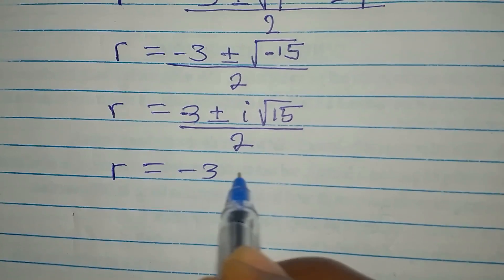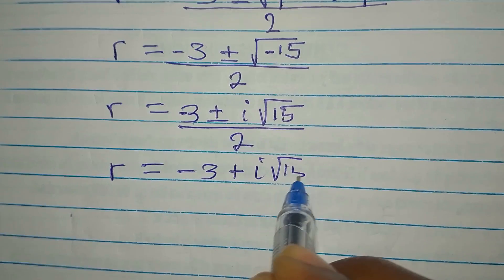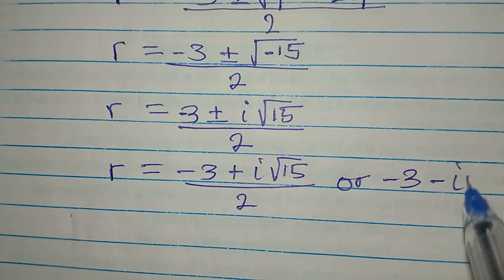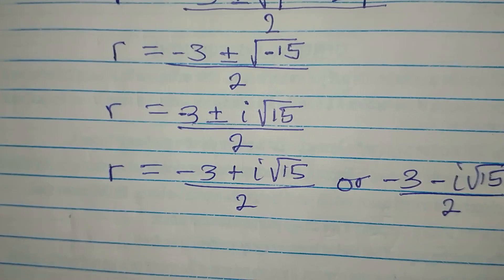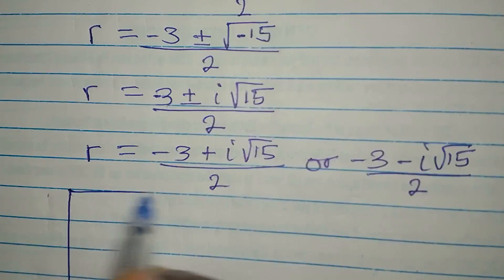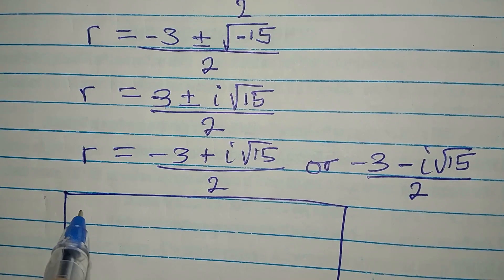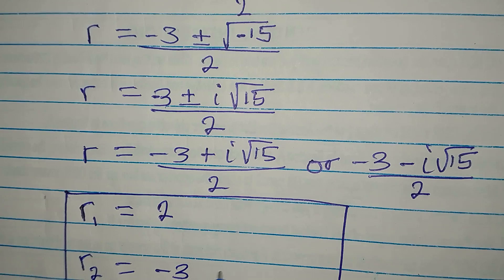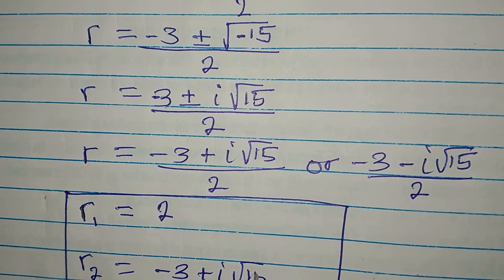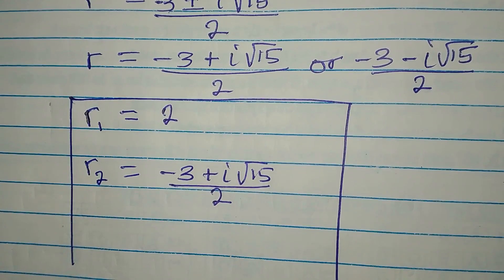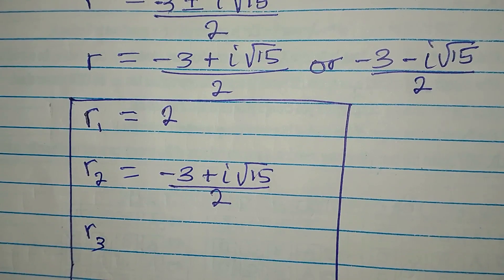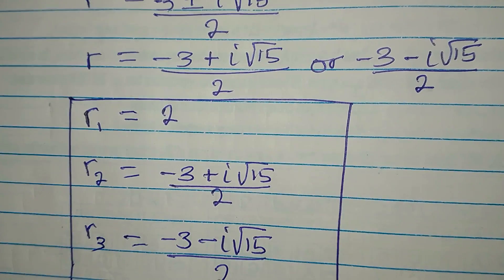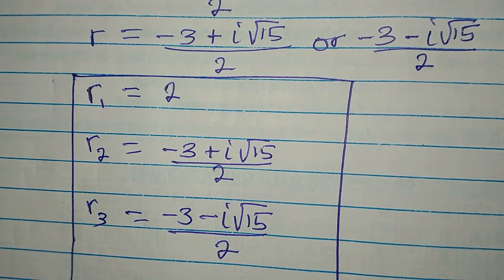So r equals minus 3 plus i root 15 over 2, or minus 3 minus i root 15 over 2. Let's bring the three solutions together. We have r1 equals 2, r2 equals minus 3 plus i root 15 divided by 2, and r3 equals minus 3 minus i root 15 divided by 2. These are the three solutions to the equation.